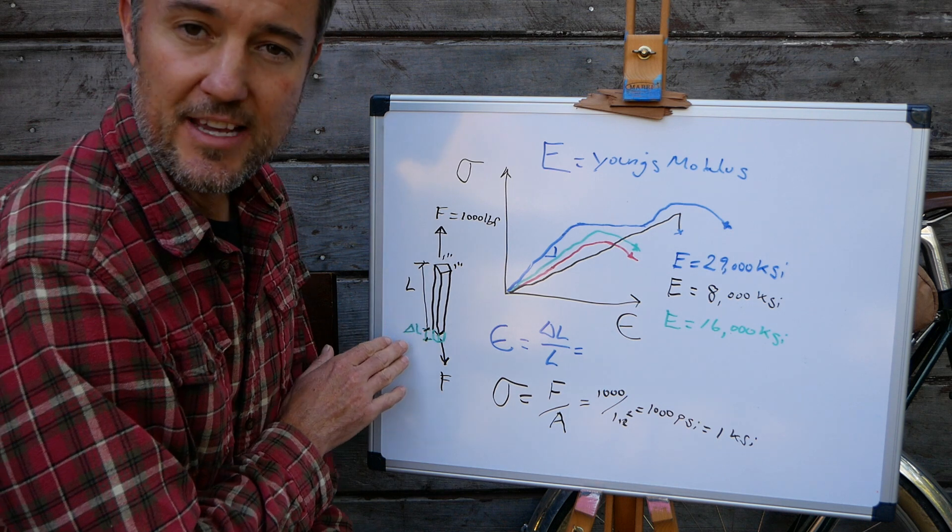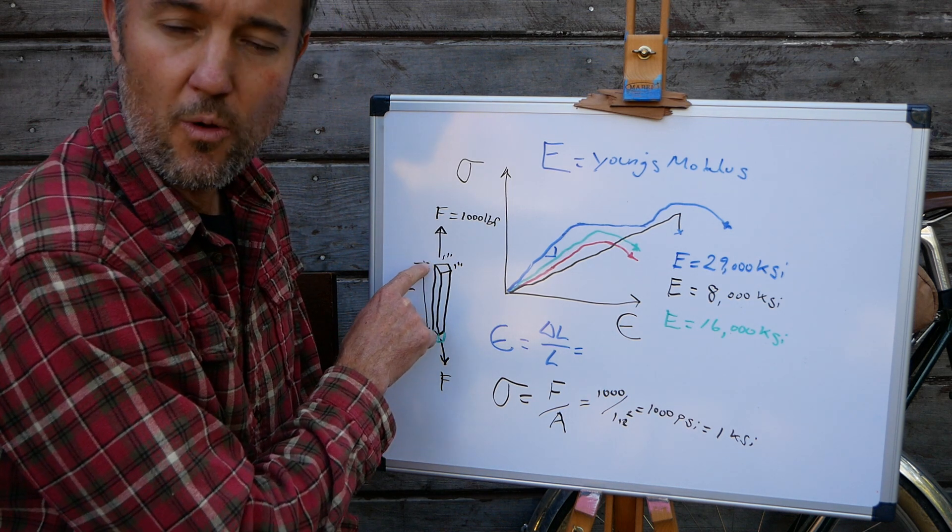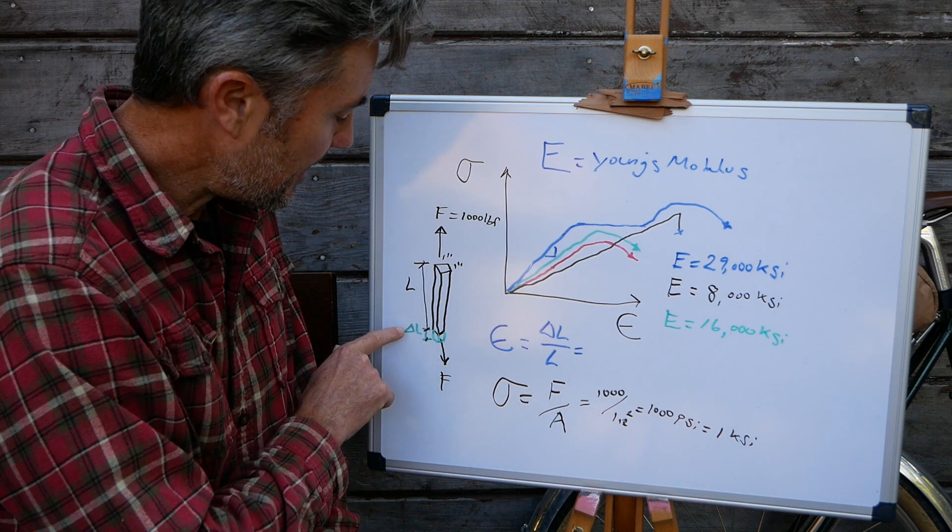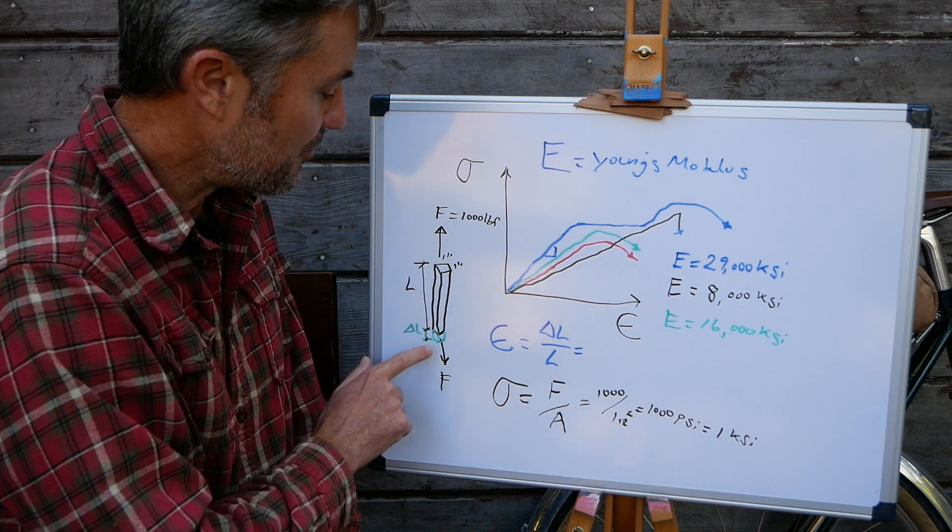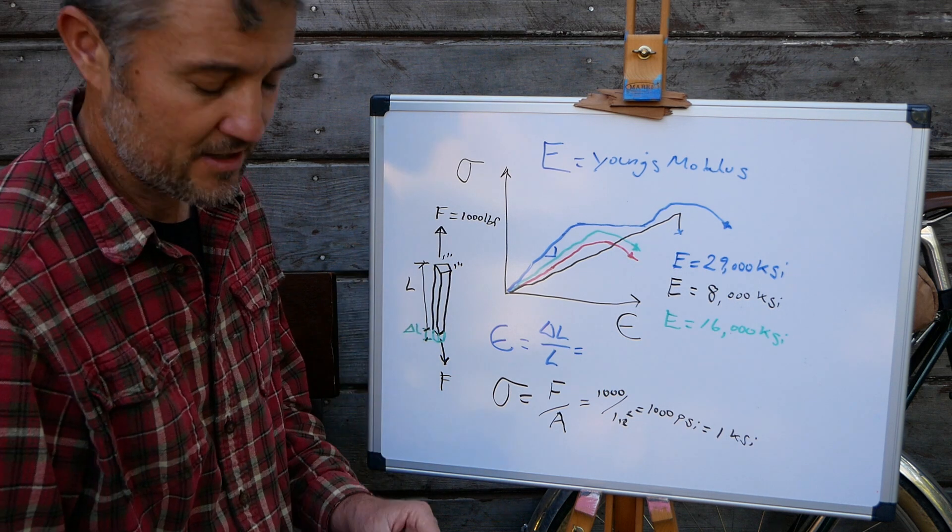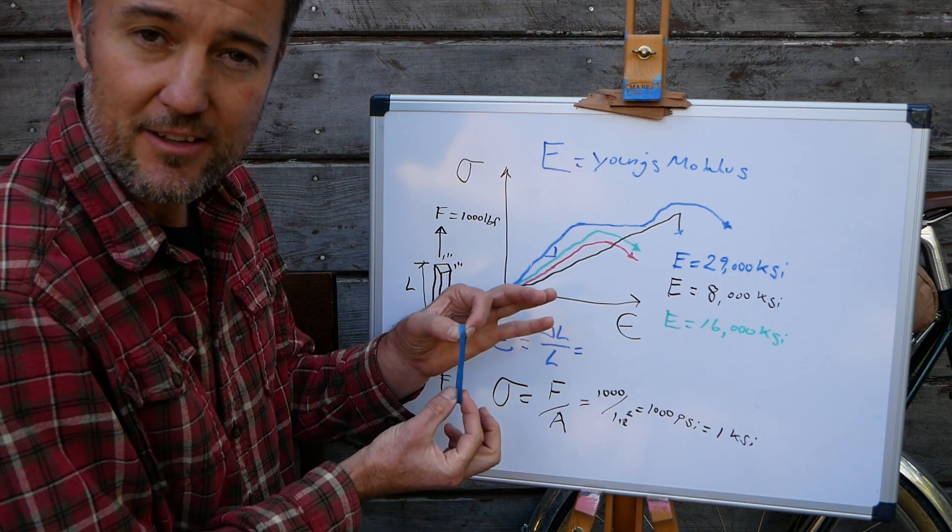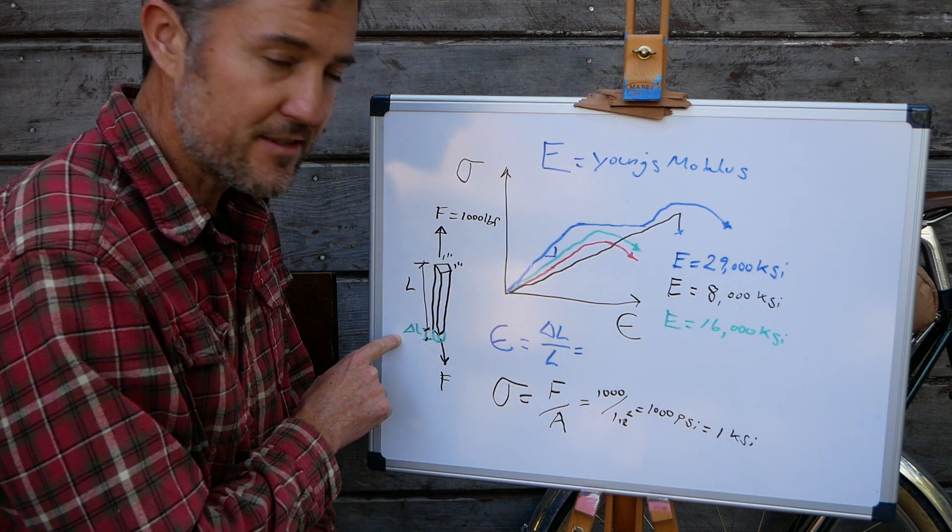Over here, I have a sample bar of steel. It has a cross section that is one inch by one inch. It has an initial length L and it has a change in length of delta L because it has forces applied to it at both ends. So let's say I had a rubber band here. It has an initial length right now and then when I pull on it, it stretches. So that's what this represents here.